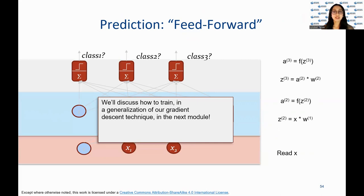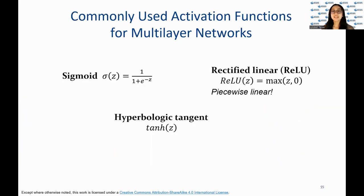We'll discuss how to train using a generalization of the gradient descent technique in the next module. The sigmoid function is commonly used as an activation function in neural networks. It maps any input to a value between 0 and 1, making it useful for binary classification tasks.